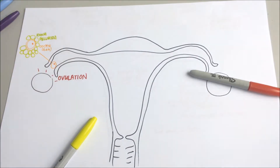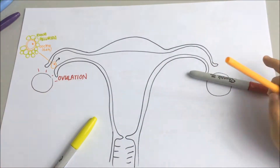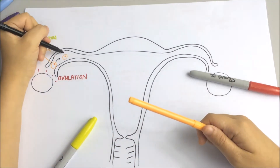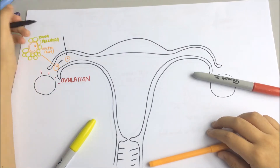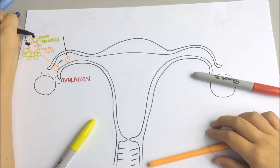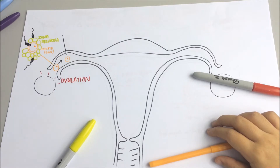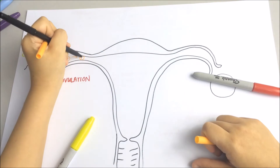During sexual intercourse, approximately 300 to 500 million sperms are released in an ejaculation. When the sperm reaches the vagina, it will swim up through the uterus towards the fallopian tube, aided by muscular contractions of the uterus and fallopian tube. Once the sperm comes into contact with the ovum, it will release a special enzyme to penetrate the plasma membrane of the egg cell.